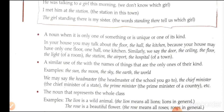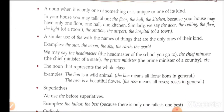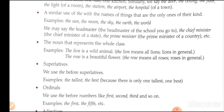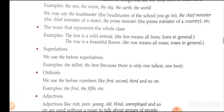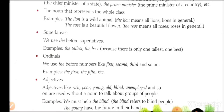A similar use of 'the' is with names of things that are the only ones of their kind: the sun, the moon, the sky, the earth, the world. We may say 'the headmaster of the school you go to,' 'the chief minister of a state,' 'the prime minister of the country,' etc. 'The' is used with a noun that represents a whole class — for example, 'the lion is a wild animal' means lions in general; 'the rose is a beautiful flower' means roses in general. With superlatives we use 'the' — the tallest, the best. With ordinals we use 'the' — the first, the fifth.